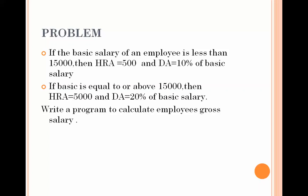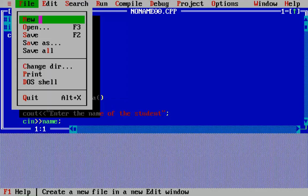We have two conditions: if the employee's salary is less than 15,000, DA and HRA take values of 10% and 500 respectively; if it is greater than or equal to 15,000, we apply the second condition. We can clearly use the if-else decision control structure, and the condition will be based on the basic salary, since that is the deciding factor.